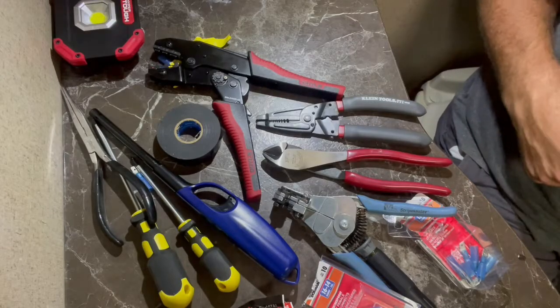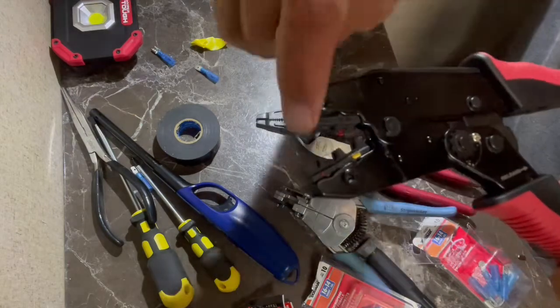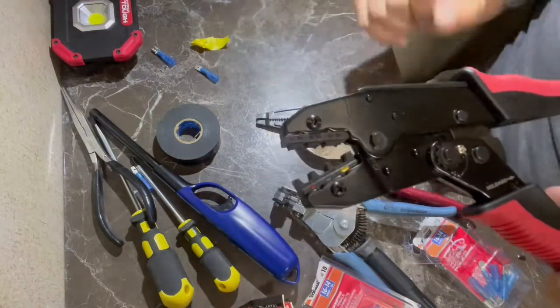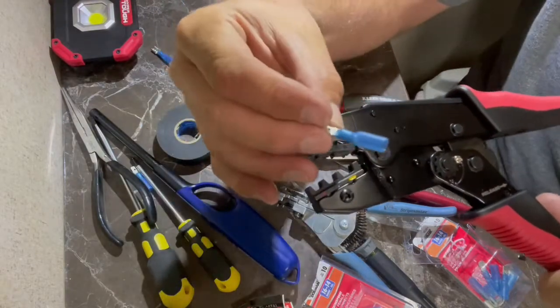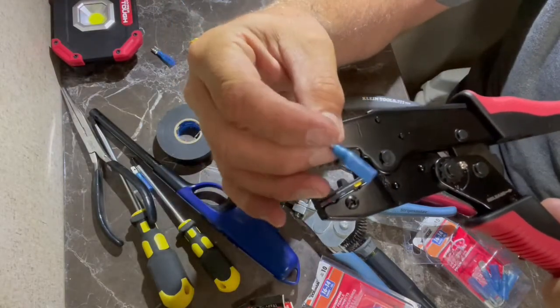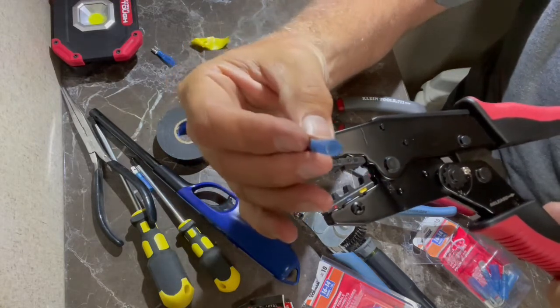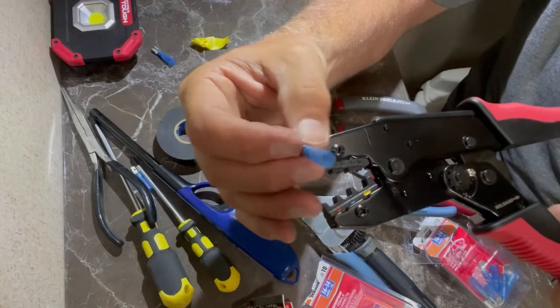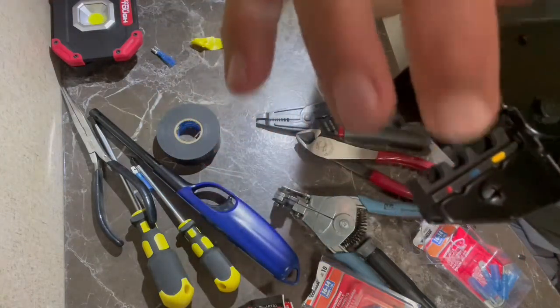Okay for this job you need a connector crimper. I bought it at Harbor Freight. It has red, blue and yellow. Those colors refer to the type of electrical connector you're using and the size. This happens to be 14 gauge and so I'm using the blue which includes 14 gauge wire. It will end up going right in here and matching up with the blue color on the crimper.